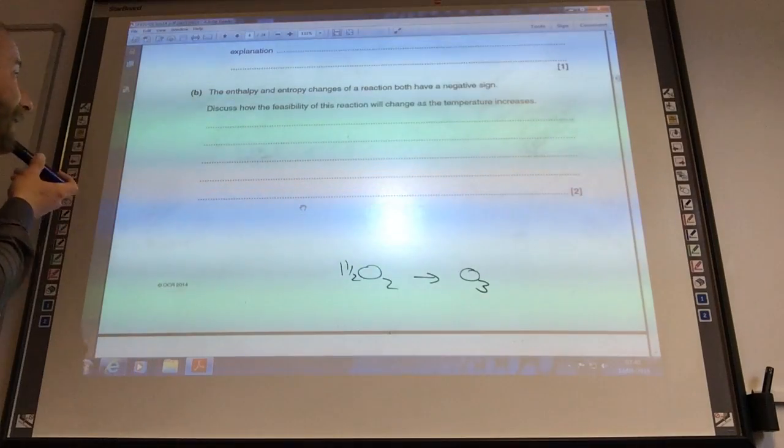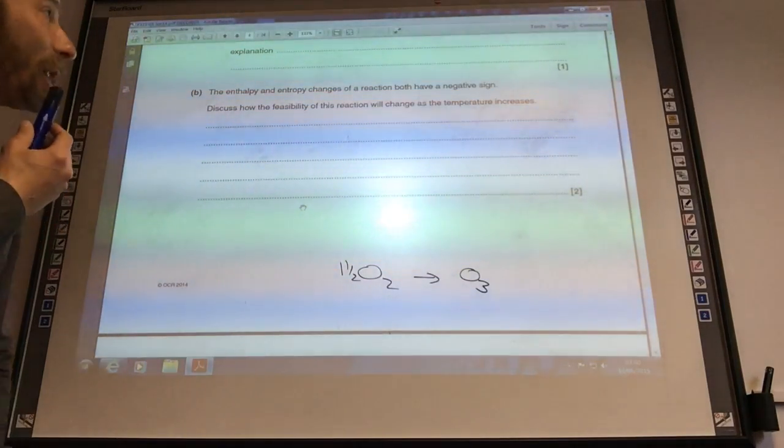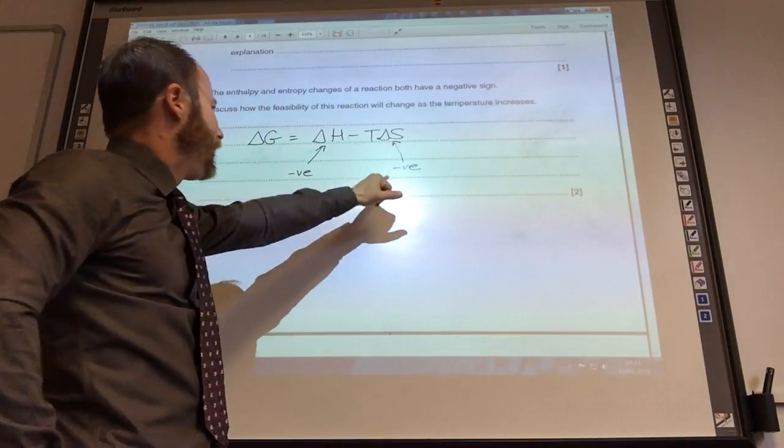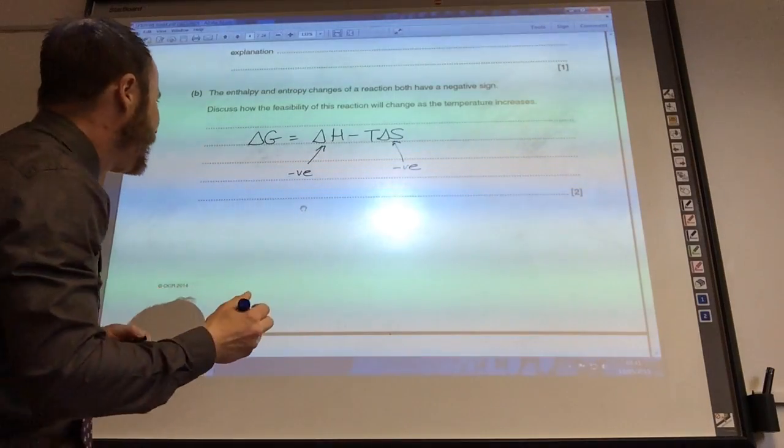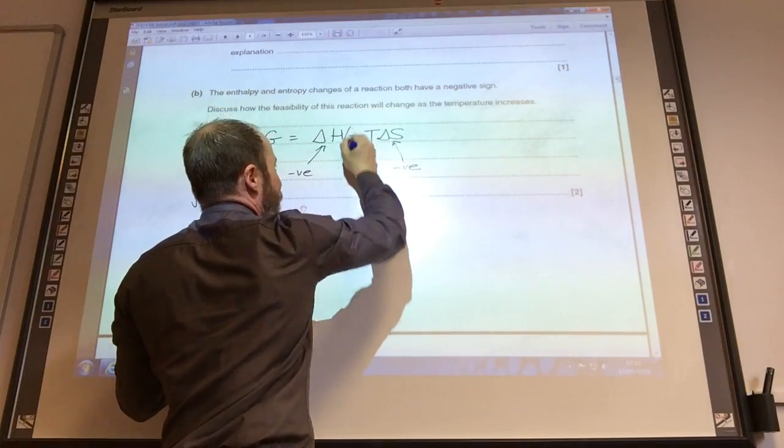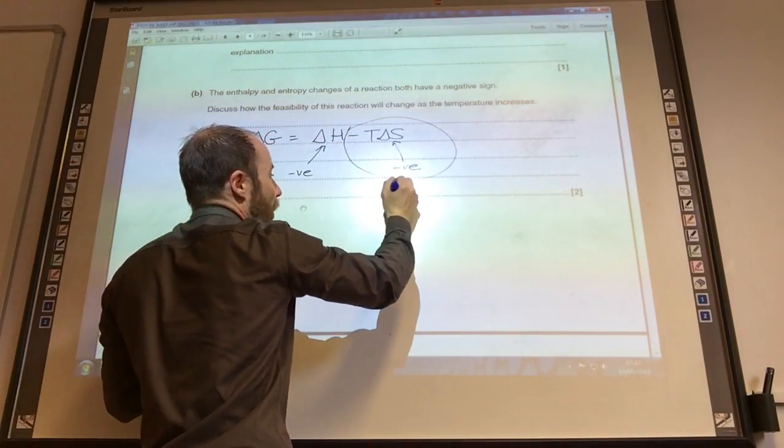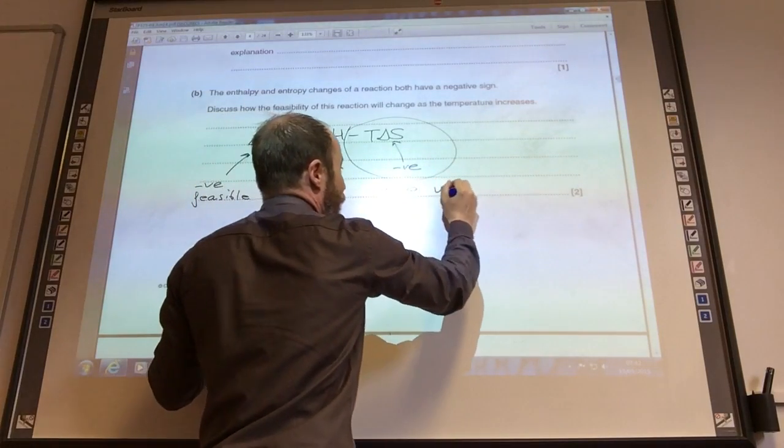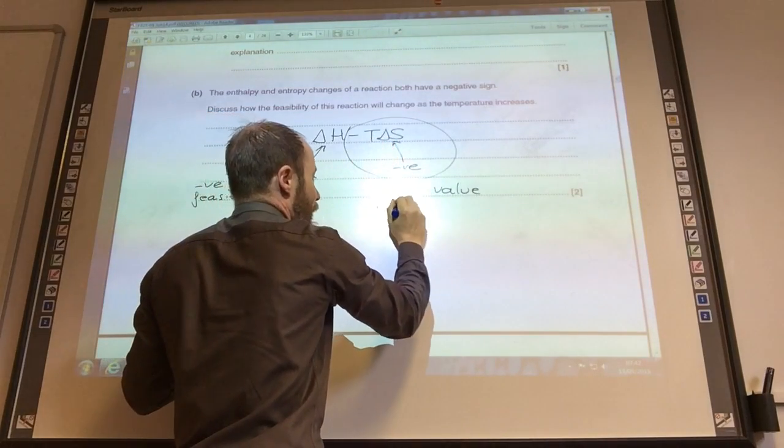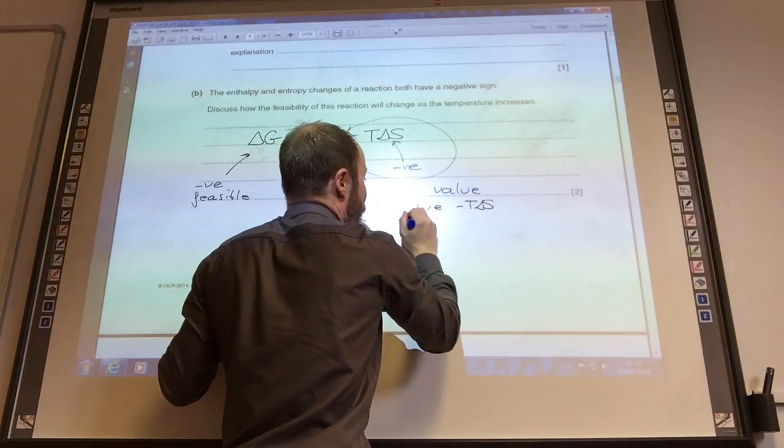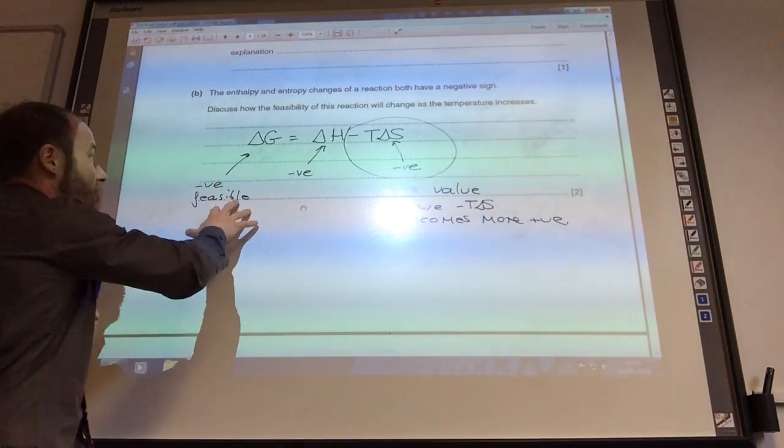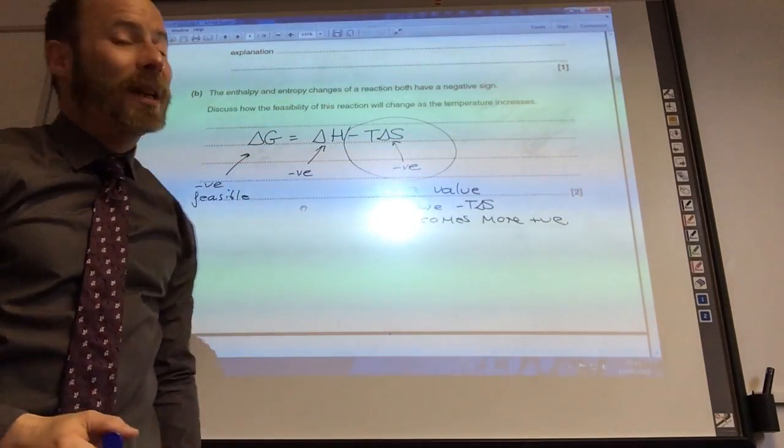Right, and then finally, entropy and enthalpy of the reaction both have a negative sign. Explain how the feasibility of the reaction can change as temperature increases. You need to use your Gibbs free energy equation to get this to work. Right, so I like to just write Gibbs free energy equation here, give myself a little note, that negative and that is negative as well. Remember, Gibbs free energy must be negative for it to be feasible. So that's going to stay the same. This term is going to be affected by temperature. I've got a negative and a negative, so overall this is a positive value. Delta S will stay the same. That's the entropy of the reaction. But as you increase temperature, minus T delta S becomes more positive. As it becomes more positive, delta G will become less negative and therefore it becomes less feasible as you increase temperature.